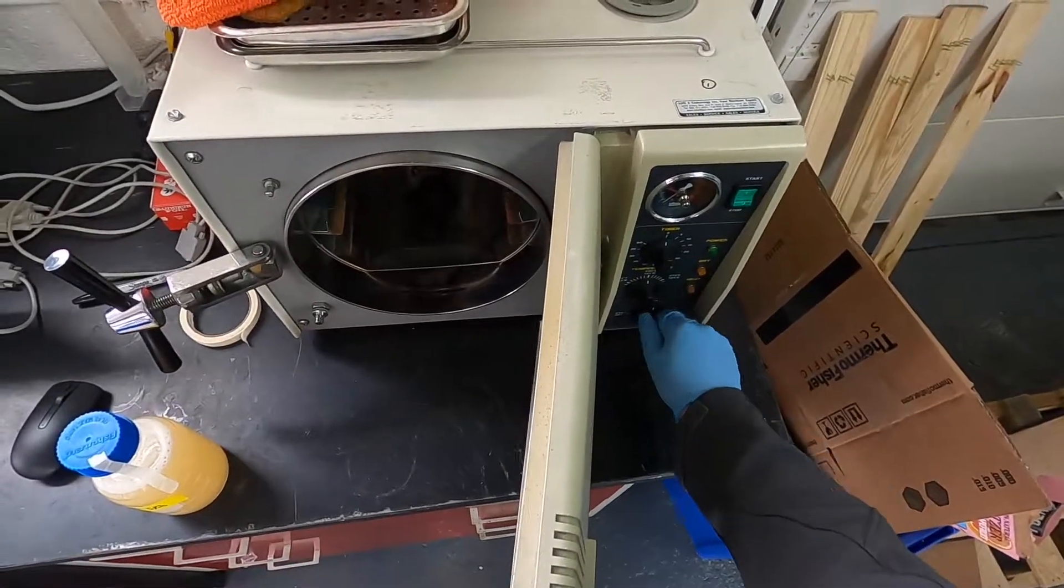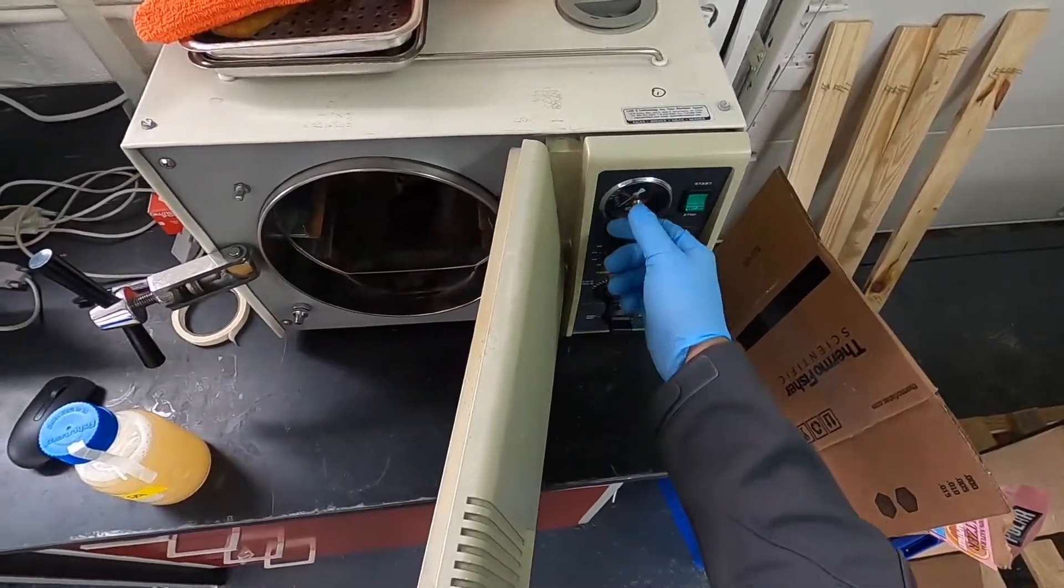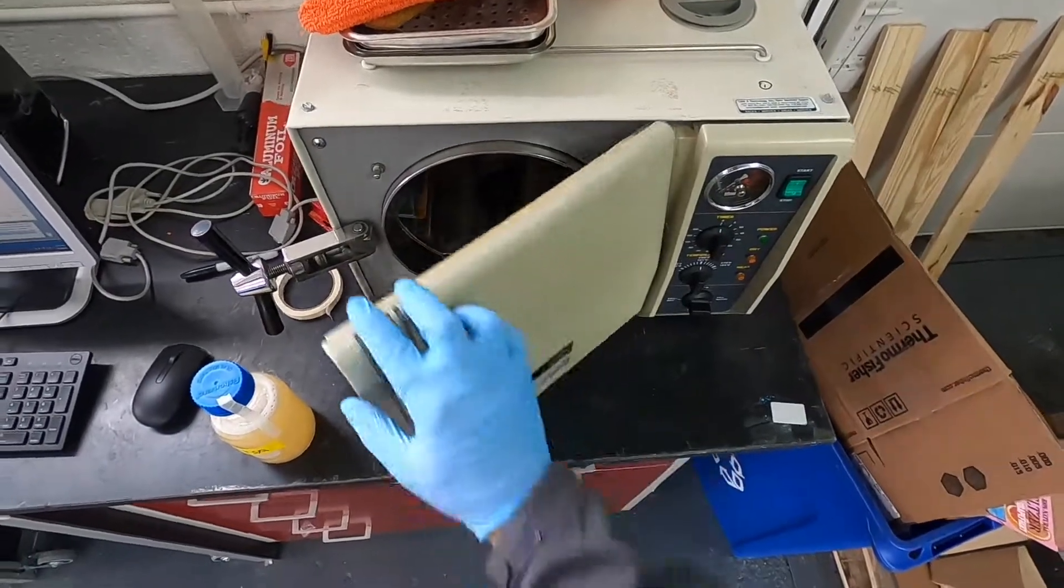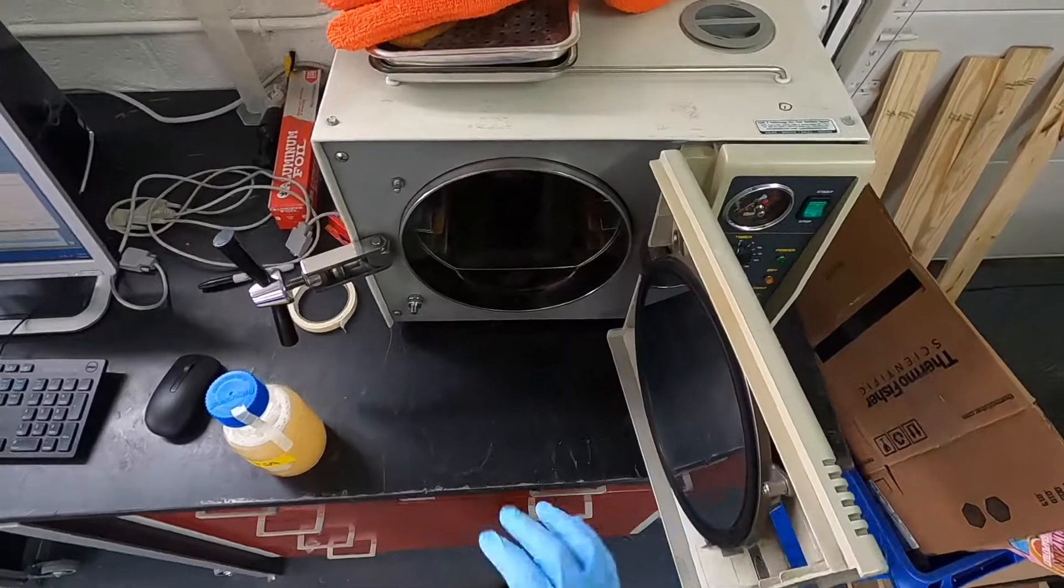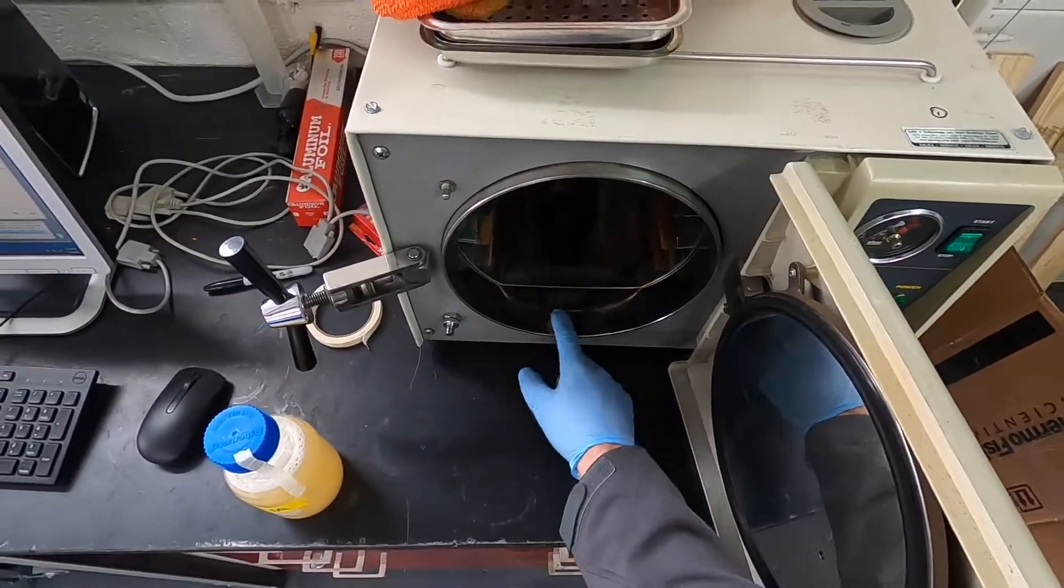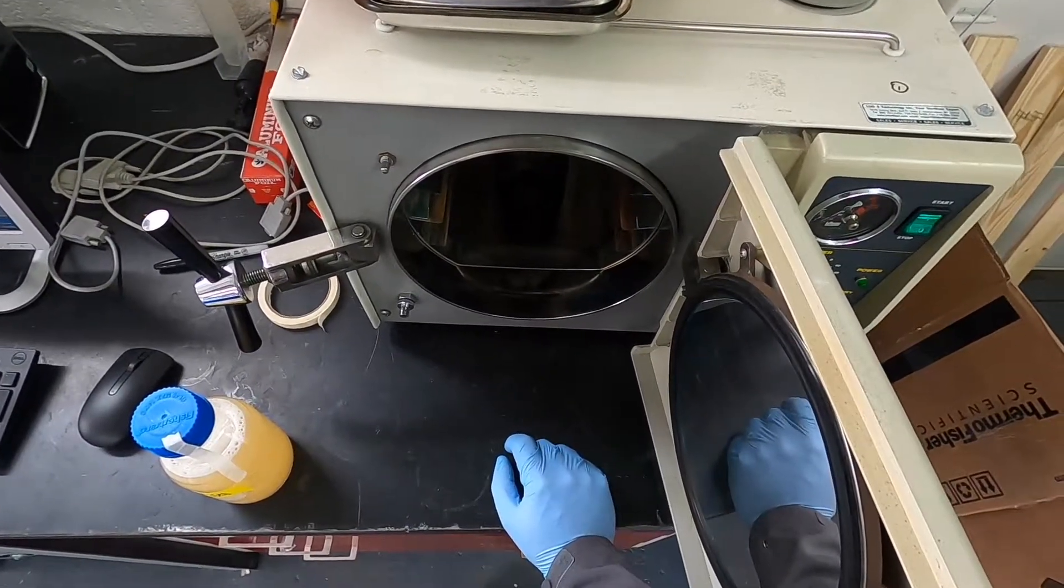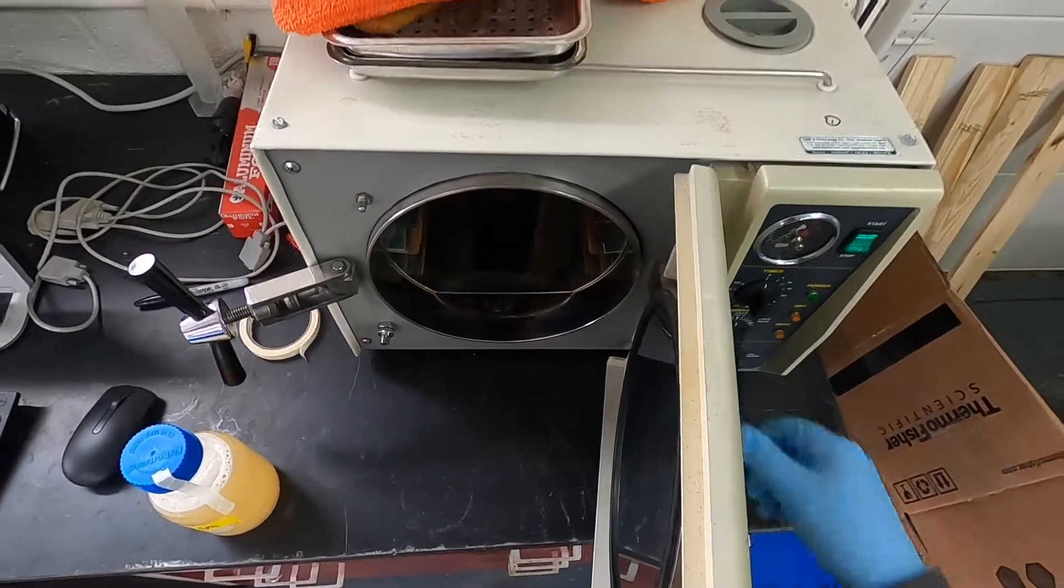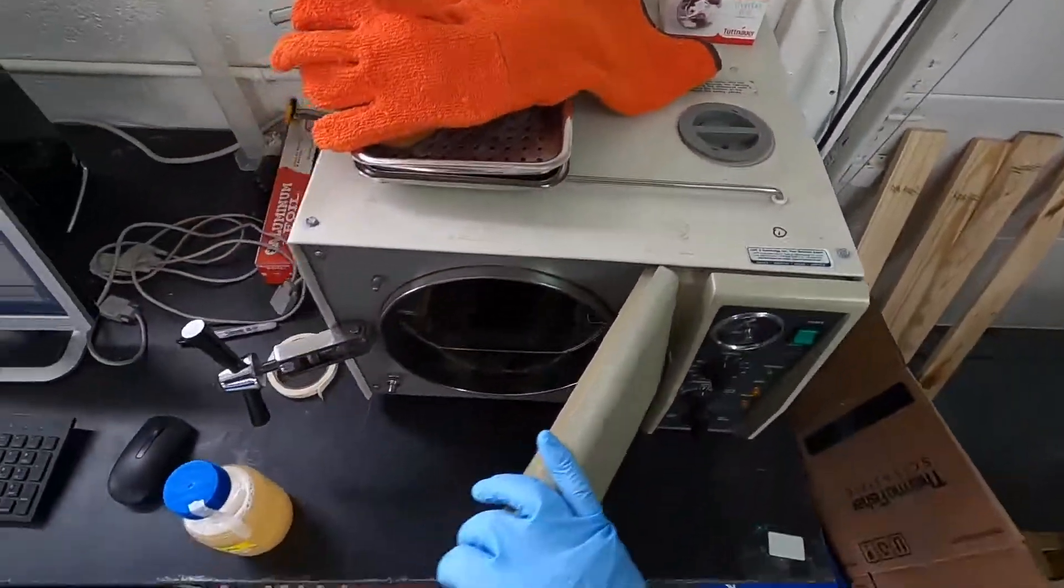This is an old school autoclave and it works awesome. So we fill this with water. This is an old Tuttnauer 2540M, for manual. Wait until the water comes out to this bevel here. This will fill the chamber with the water that will turn into steam. We'll stop this, we'll check the reservoir. That could use some water.